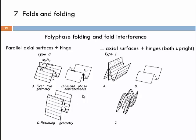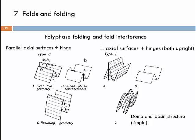When the first and second folding events have perpendicular axial surfaces and hinge lines, and both are upright folds that interfere with each other, the resulting fold geometry is what we call a dome and basin structure — a much more complex, complicated fold geometry. This is a relatively simple situation because we have a high angle between the two hinge lines and the two axial surfaces of the first and second fold generations.